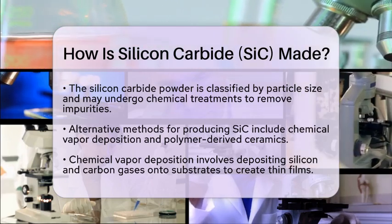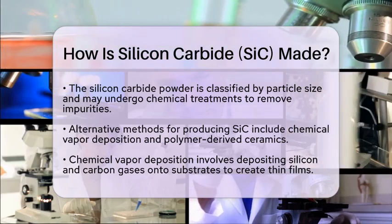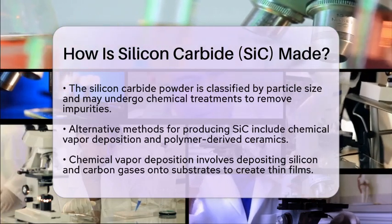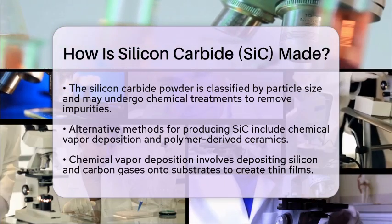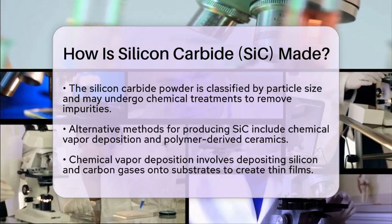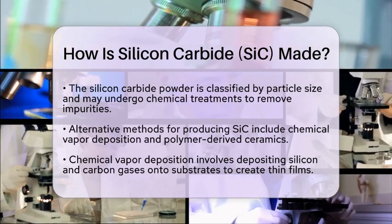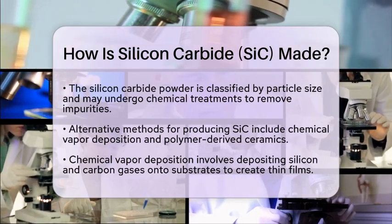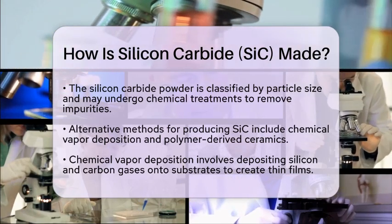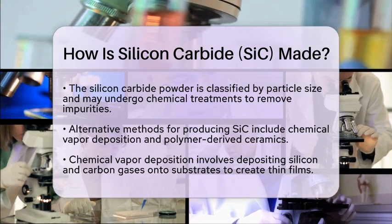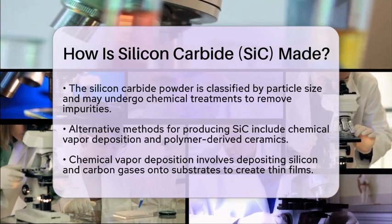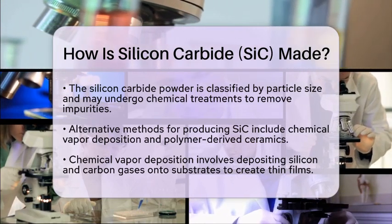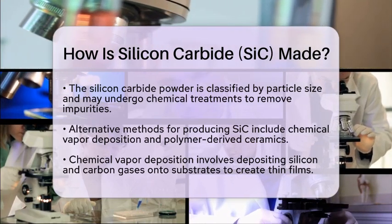There are also alternative methods for producing silicon carbide. One is chemical vapor deposition, where silicon and carbon-containing gases are deposited onto substrates at high temperatures. This creates thin films or coatings of silicon carbide.